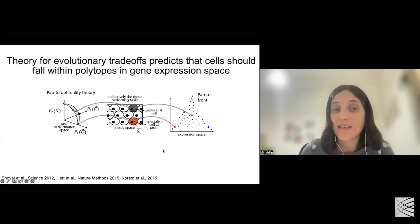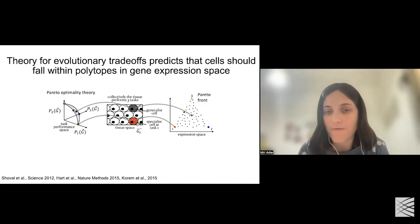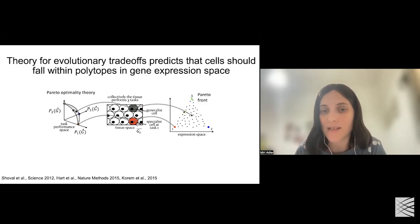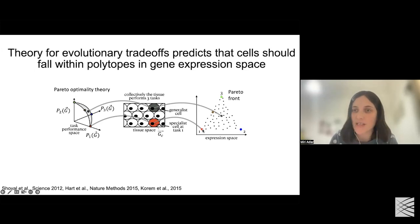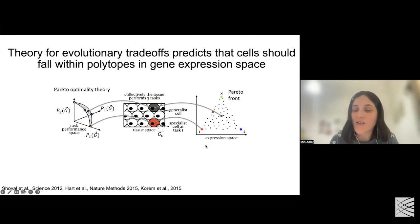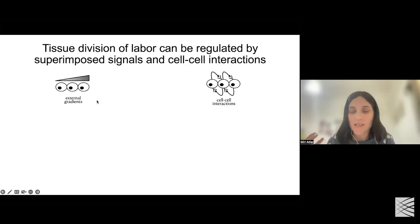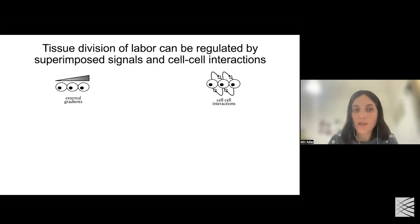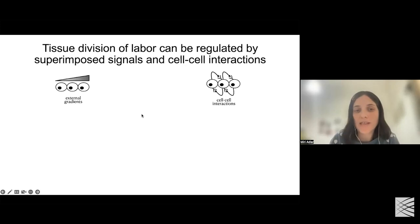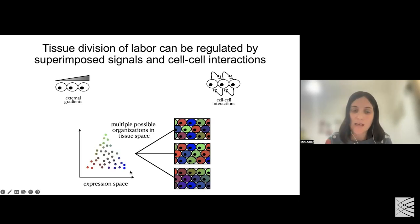When we think of cells in a tissue context, cells are not individualists — every cell does not need to be optimal on its own, but rather cells collectively perform functions for the tissue they reside in. The question is: how can cells decide whether to become specialist or generalist cells? Cells need to self-organize to govern their specialization. We can think of at least two central mechanisms: cells can either be guided by an external gradient, such as an oxygen gradient, or they can use cell-cell interactions to influence each other to perform different functions.